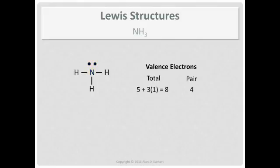Then we check. Central atom has fewer than four pair. Well, it's got a lone pair. It's sharing three pair. That's four pair. This one is finished.